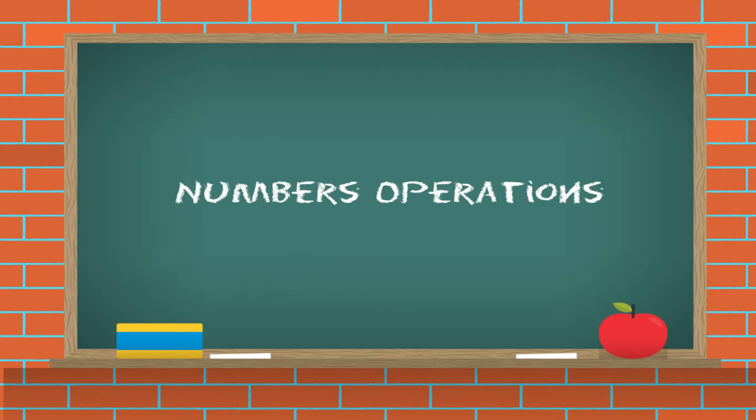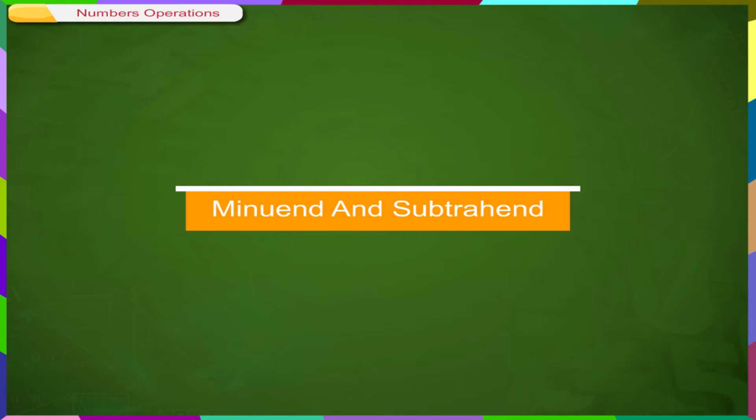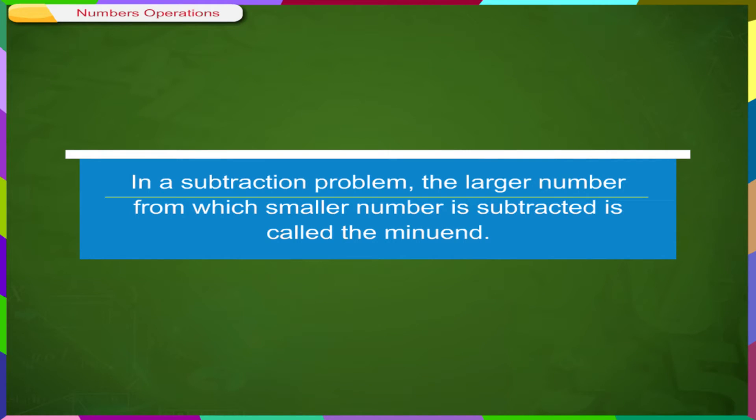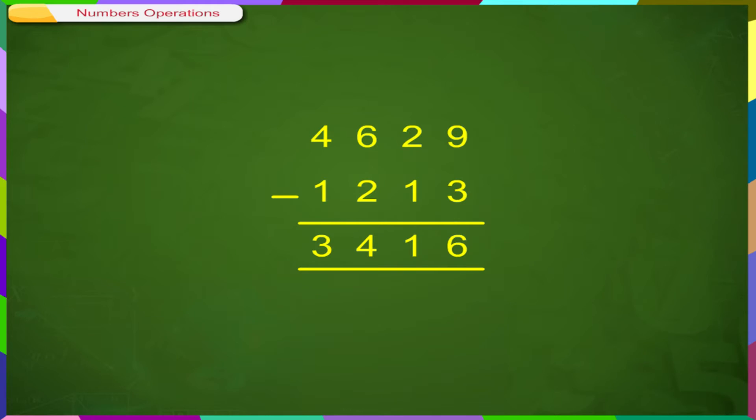Number Operations: Subtraction. Minuend and Subtrahend. In a subtraction problem, the larger number from which smaller number is subtracted is called the minuend. The smaller number which is subtracted is called subtrahend.